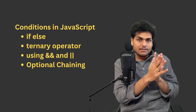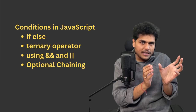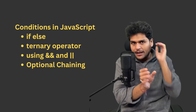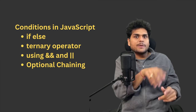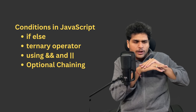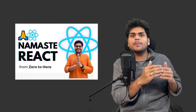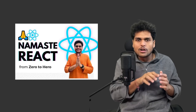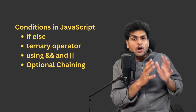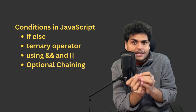The fourth thing is if/else and conditions — how to write if and else cases in JavaScript, then the ternary operator and conditional rendering using the AND operator. This is very important and we use it a lot inside React when building projects. A lot of people get confused when they see a question mark or double dots. You should know the ternary operator, the AND operator, the OR operator, and also optional chaining in JavaScript.